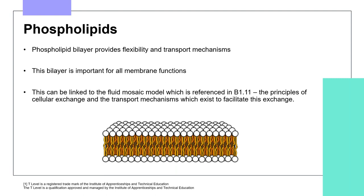Now the structure of the phospholipid has been covered, it can be linked to the phospholipid bilayer as the major component of all biological membranes, providing flexibility and transport mechanisms. The hydrophilic head and hydrophobic tails of the phospholipid are key here. This can then link to the fluid mosaic model referenced in B1.11, which looks at principles of cellular exchange and transport mechanisms, including diffusion of small nonpolar molecules and other mechanisms such as carrier and channel proteins found within the cell surface membrane.